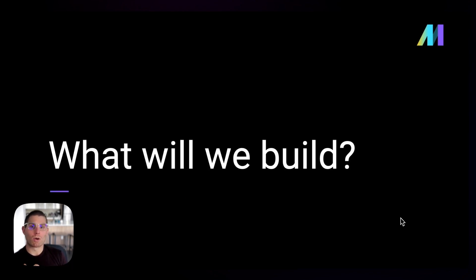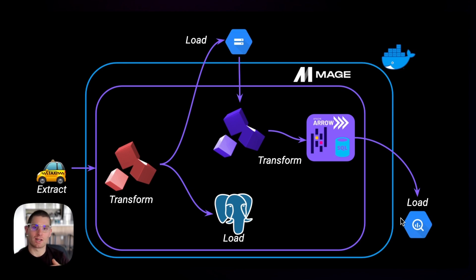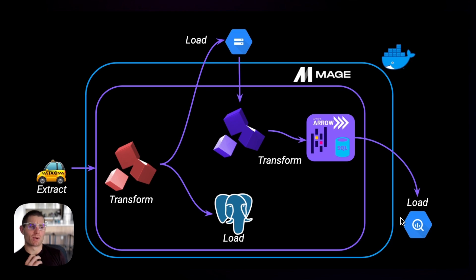Next, I'm going to talk about what we're going to build in this course. Mage and a Postgres database are going to run in a Docker environment. For the final project, we're going to take a New York yellow taxi cab dataset, do some transformations on it, load it to Postgres, load it to Google Cloud Storage, and then perform more transformations using tools like Pandas, Apache Arrow, and SQL, then load it to Google BigQuery. We'll walk through how to set up Google Cloud Storage and BigQuery as well.